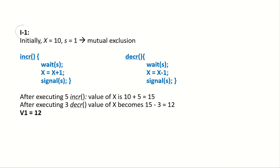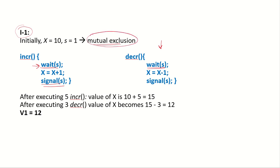Let's look at Implementation 1 where s is a binary semaphore initialized to 1, and x is initially 10. If s equals 1, mutual exclusion will be ensured. One thread executes wait(s), so s becomes 0. Now if another thread wishes to enter either the increment or decrement function, it cannot because s is 0 and it will keep waiting. Until s is signaled and becomes 1 again, none of the other threads can execute either increment or decrement. So with s = 1, only one thread can execute at a time.